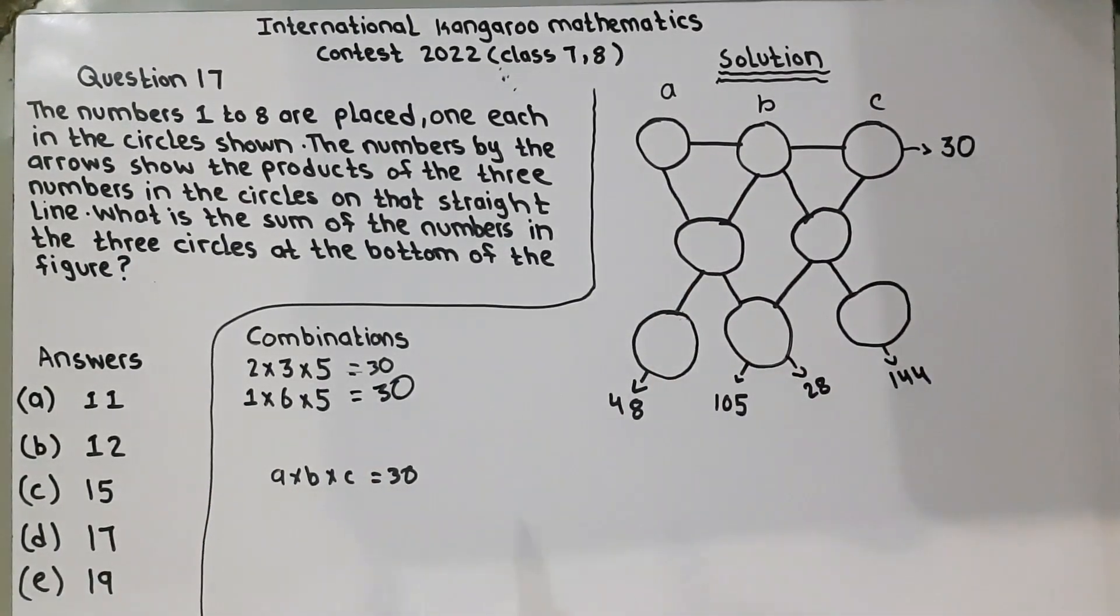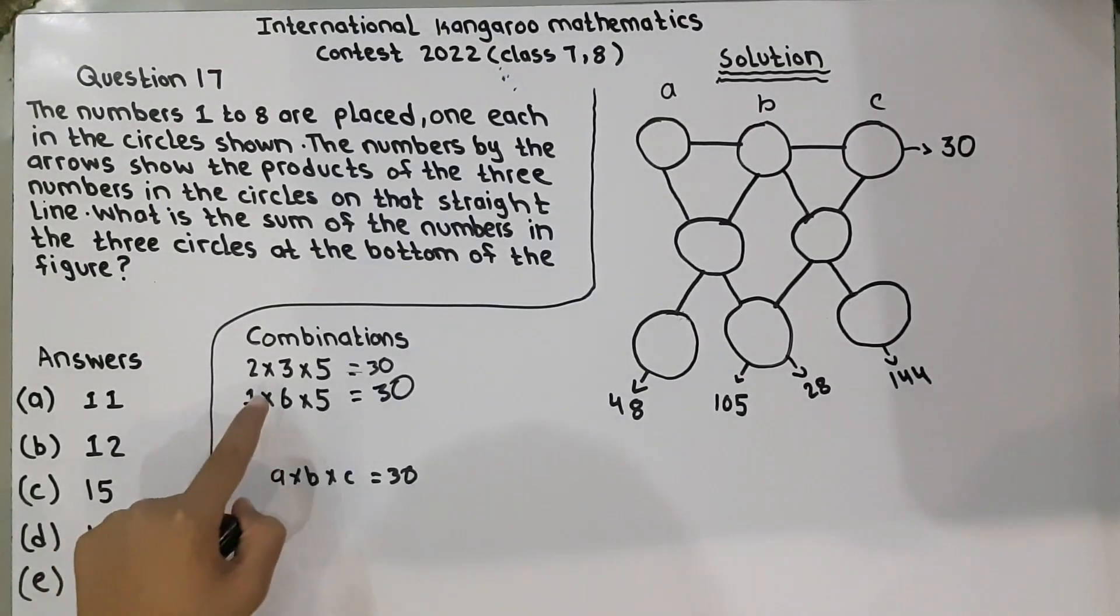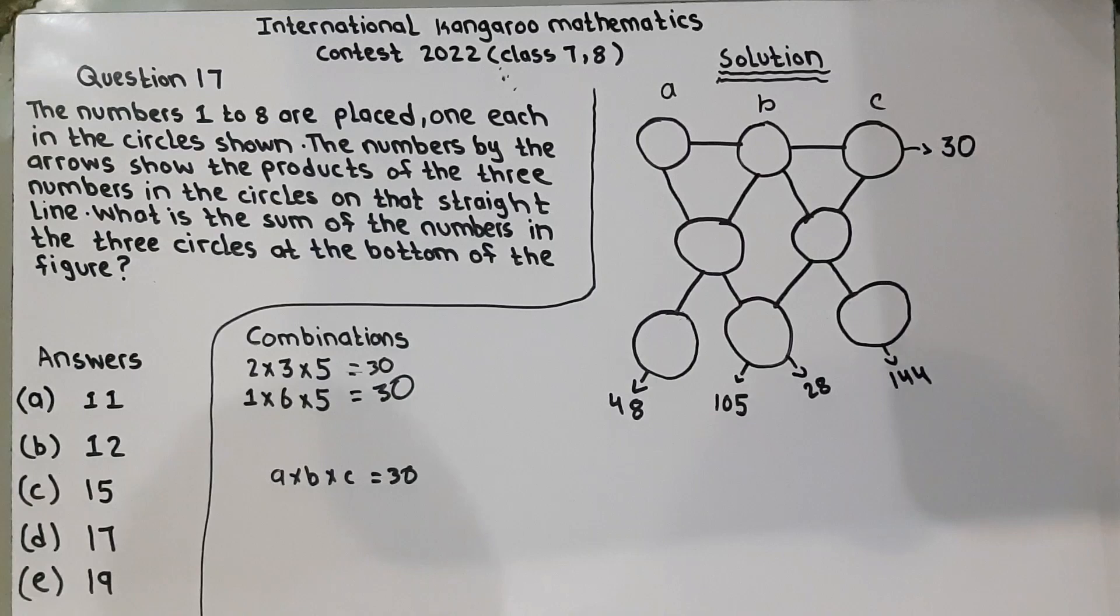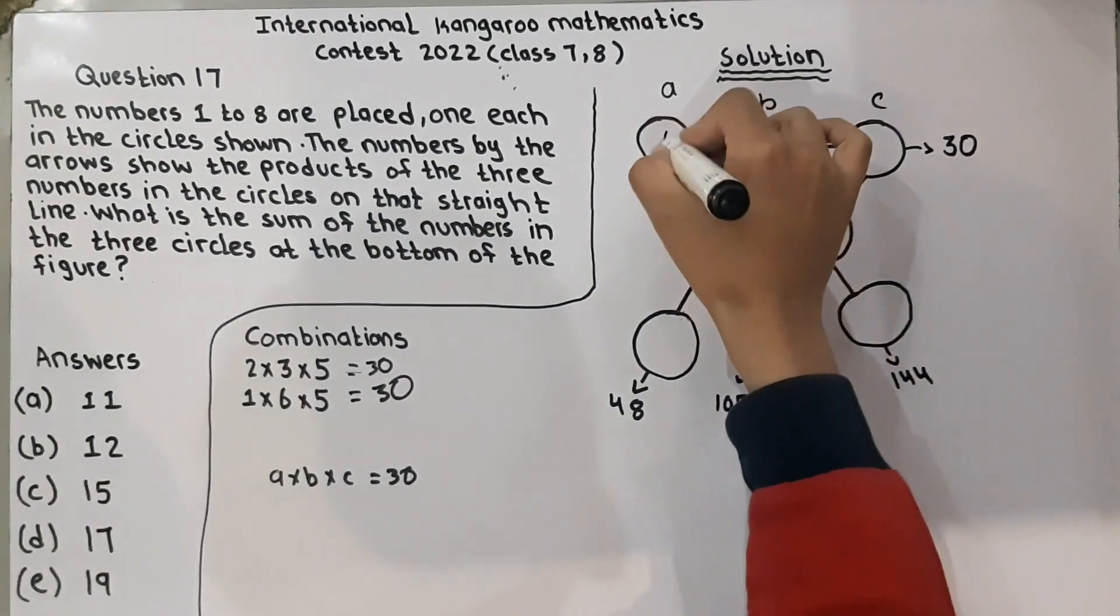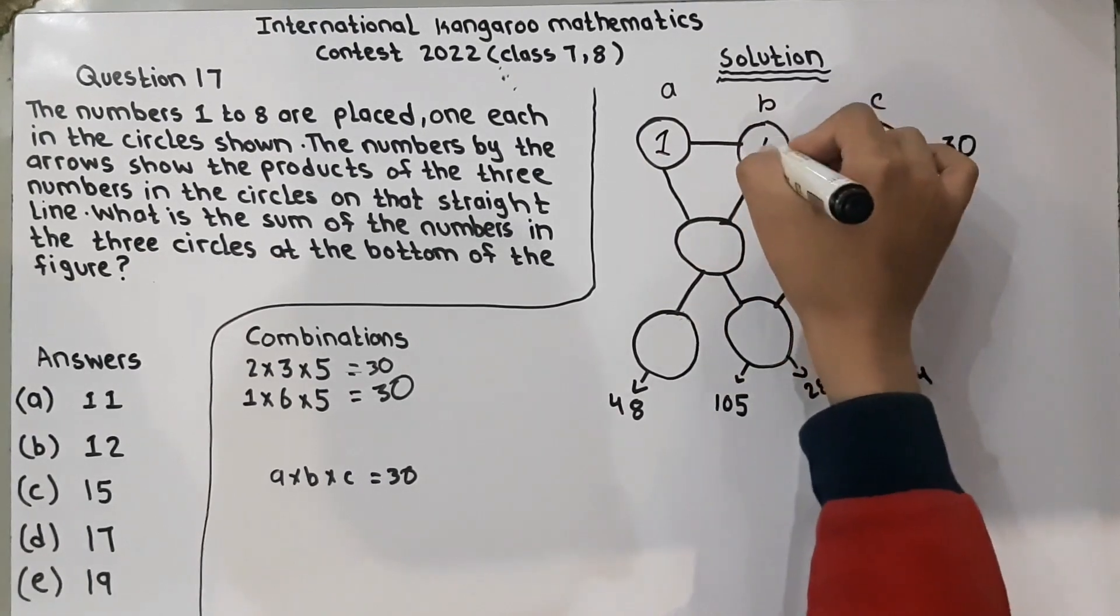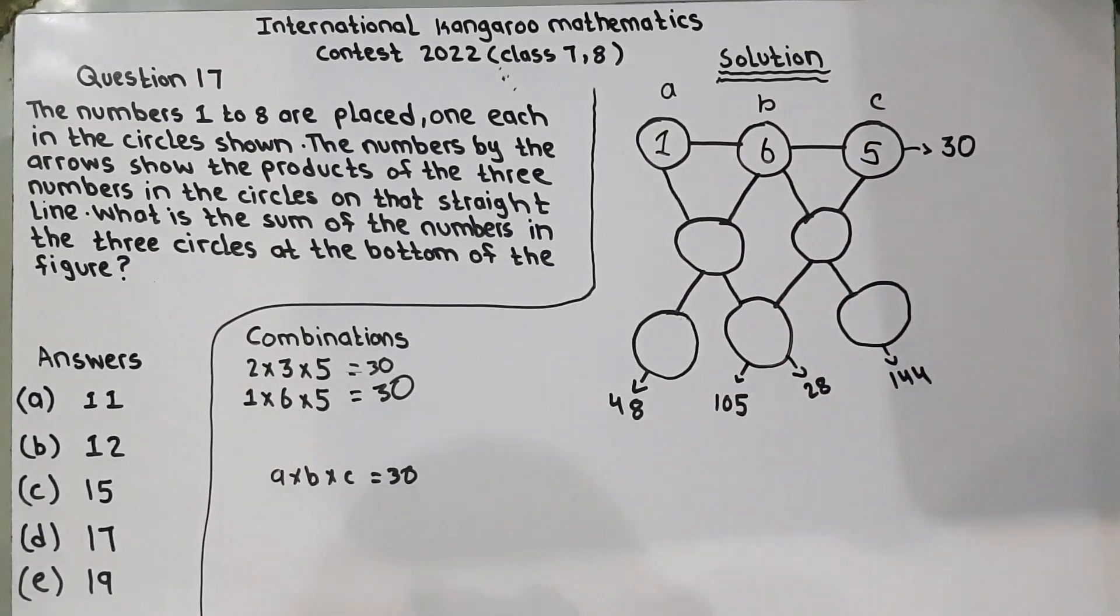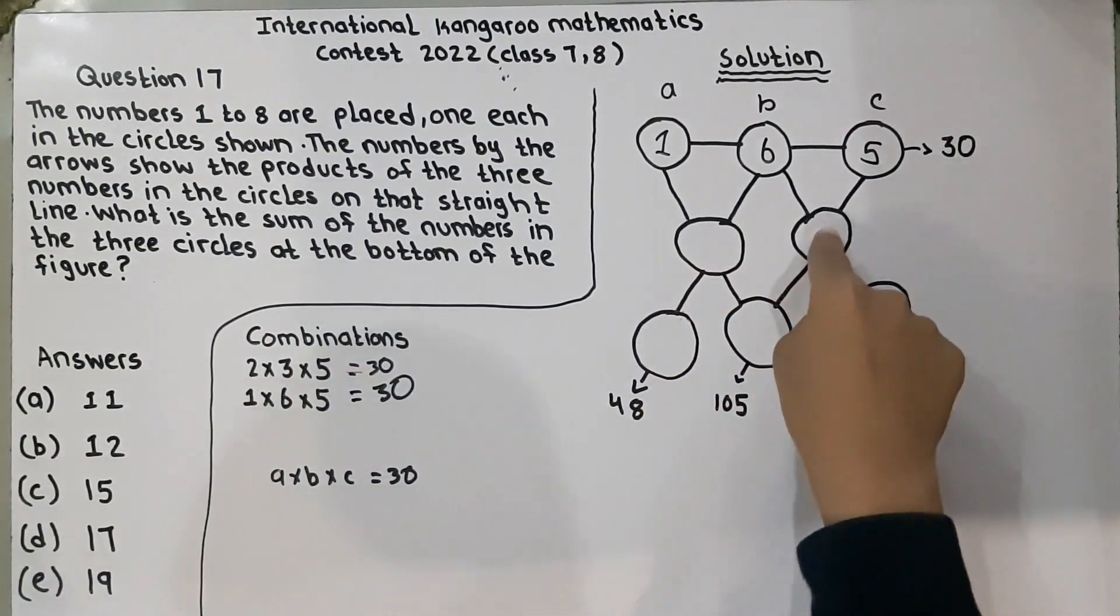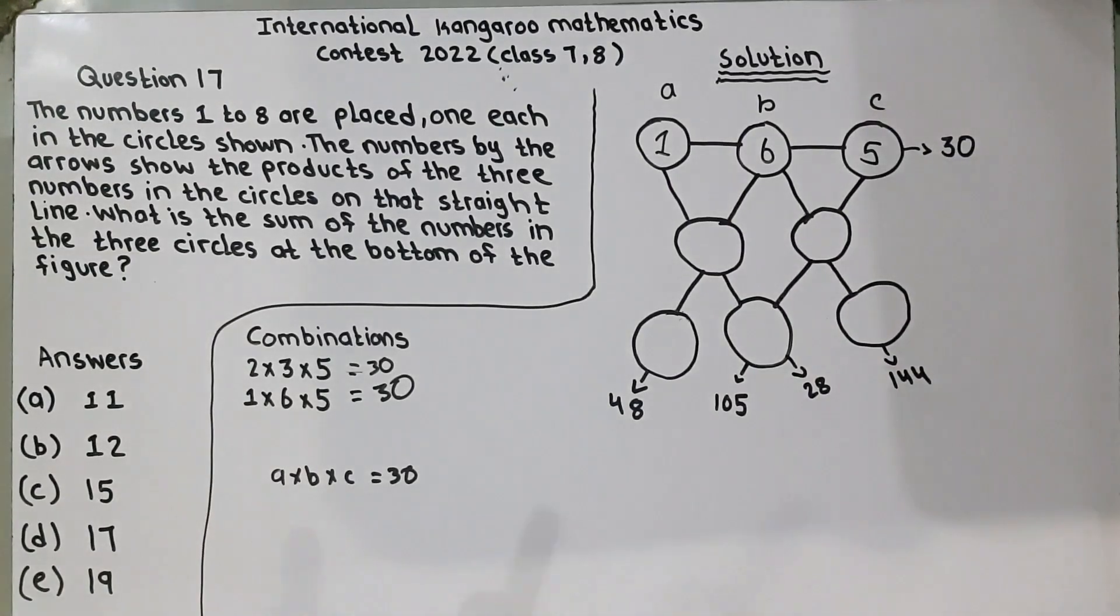So, I have checked this and that it doesn't work here, this 2 multiplied by 3 multiplied by 5. So, we will put 1 multiplied by 6 multiplied by 5 here. So, here comes 1 multiplied by 6 multiplied by 5 is equal to 30. Now we have to find these 5 circles in which numbers will come in there.